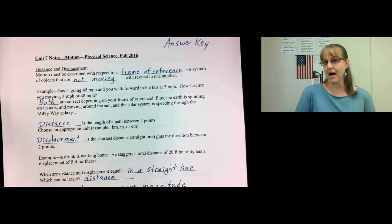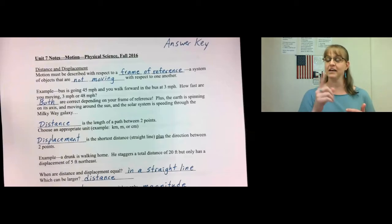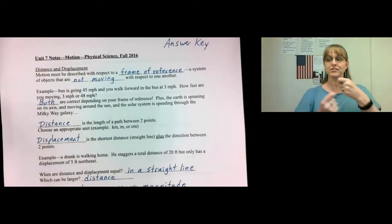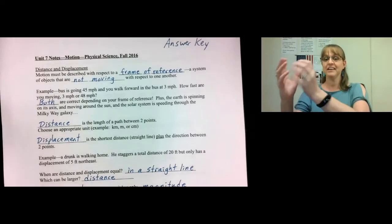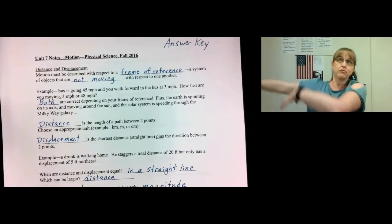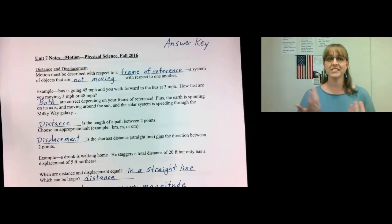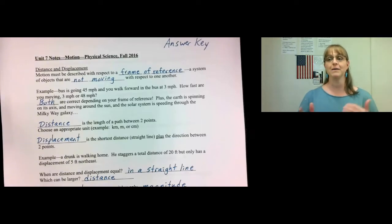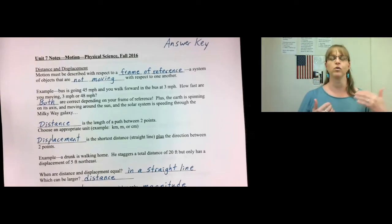You choose your frame of reference by what you want to compare it to. If you wanted to get really crazy, you could say the Earth is spinning on its axis, so we're not just going 48 miles per hour — we're going several thousand miles per hour. Or the Earth is moving around the Sun, so it's going even faster, and then the whole solar system is speeding through the universe in the Milky Way. So we could say we're going millions of miles per hour depending on what our frame of reference is. That's why it's very important to say: I'm comparing my motion to this object — we're assuming this is staying still and I am moving, or this object is moving.